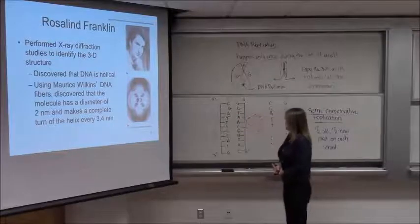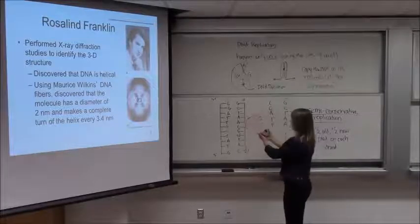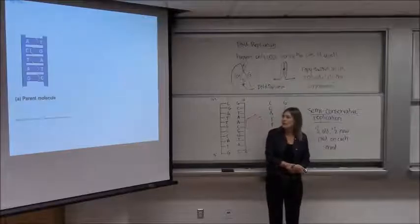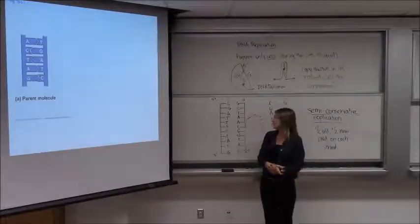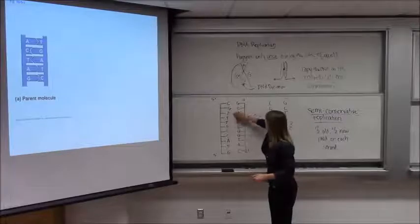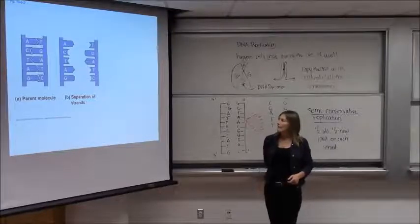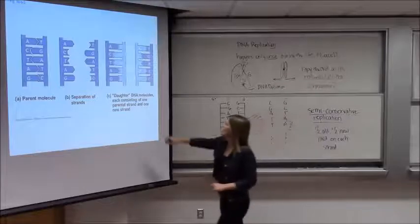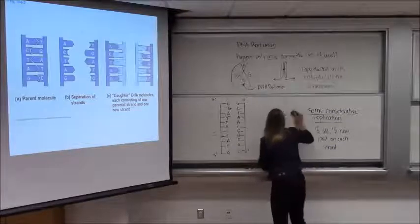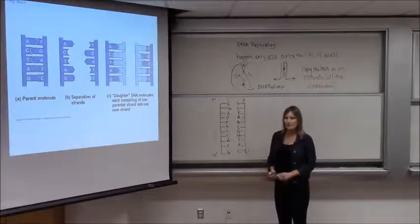So this is what happens during DNA replication. We don't end up with all old on one side and all new on the other. It's called semi-conservative replication. Here's the parent molecule — our original DNA. It's going to split apart; we're going to break the hydrogen bonds, separating the two strands. Then we're going to copy each side. Let's do that on the board with this original sequence.